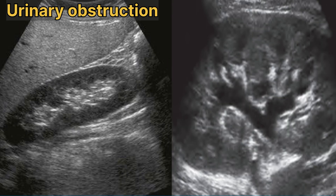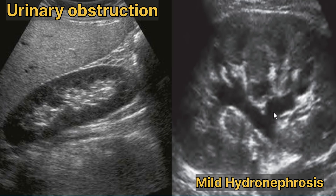Now we are going to discuss urinary obstruction. About 5% of patients with renal failure suffer from urinary obstruction. Mild or grade 1 hydronephrosis refers to a minimal amount of urine producing slight distension in the collecting system. In this sonogram we can see normal renal parenchyma adjacent to the liver, where grade 1 hydronephrosis causes only slight distension of the collecting system.